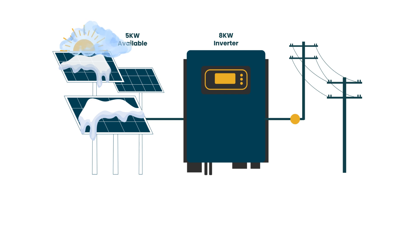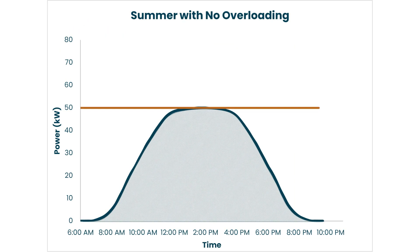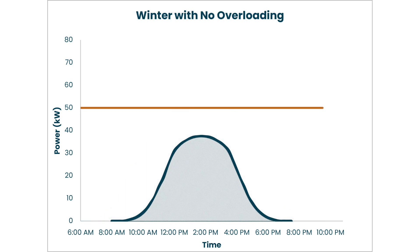Let's explore some examples with and without overloading ratios. Here is a system without overloading, where the array is sized exactly to the inverter's 50 kilowatt capacity. In the summer, the array briefly hits 50 kilowatts before dropping back again. By sizing it one to one, the inverter's full capabilities aren't really utilized. Winter is even less optimal, with shorter solar hours and reduced irradiance.